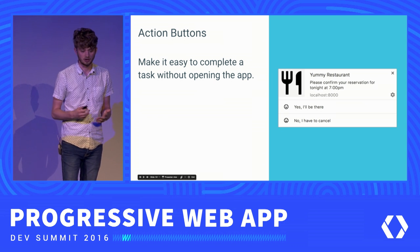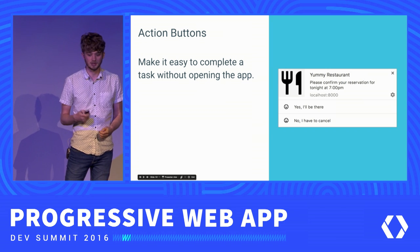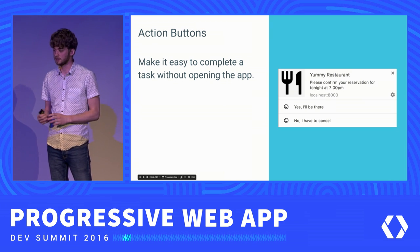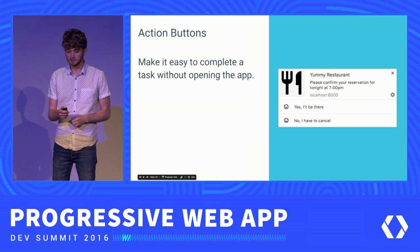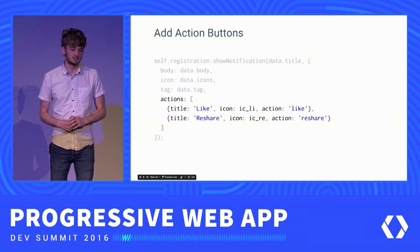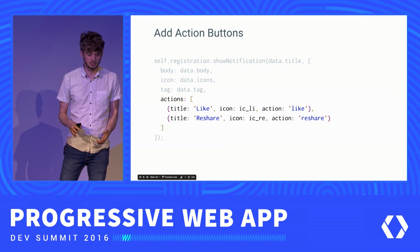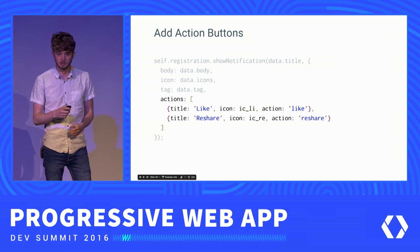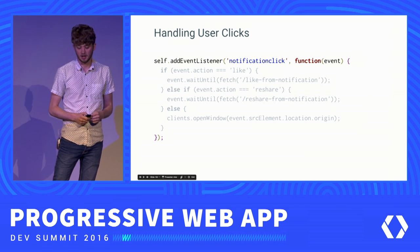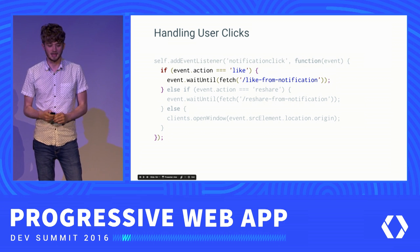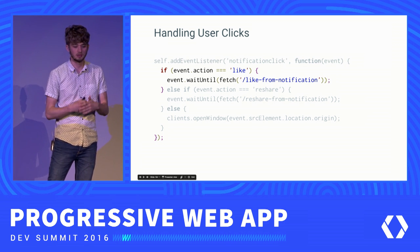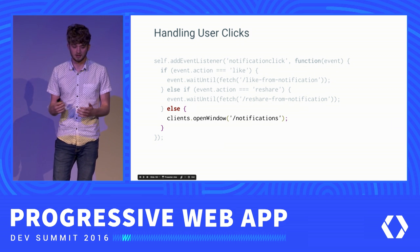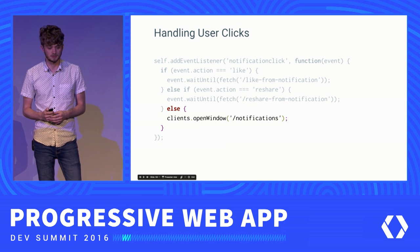We also have support for action buttons on web push notifications. These make it easy for users to complete a task without even opening the app — for example, confirming a reservation, liking or retweeting something, paying a bill, or increasing a bid on an auction. In the showNotification call, you pass in an actions object with a title, icon, and an action string key. When a user taps a button or the notification, a notificationclick event fires. If the action was 'like', reach out to the server; if there's no action, they tapped the notification itself, so open a new tab to the relevant page.